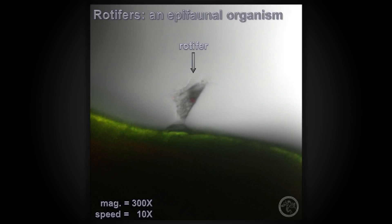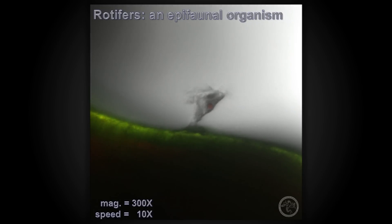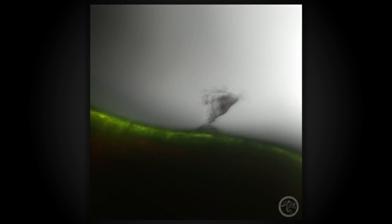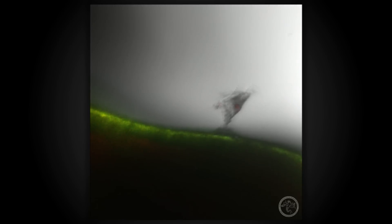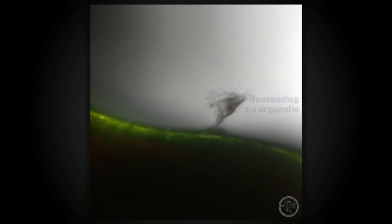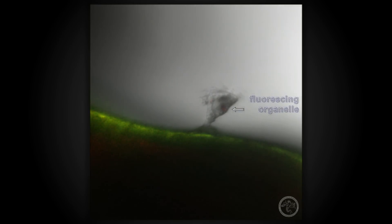Another important aspect of studying the coral symbiome is to identify its associated epifauna. This species of rotifer is one we often find when looking at lace coral. This one has a red fluorescing organelle, possibly from ingesting chlorophyll-containing phytoplankton.